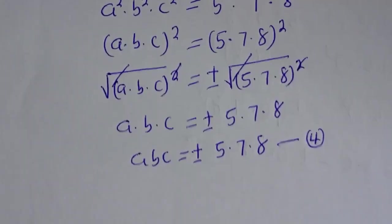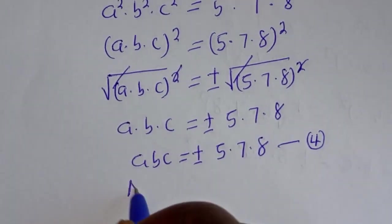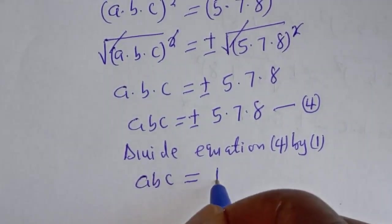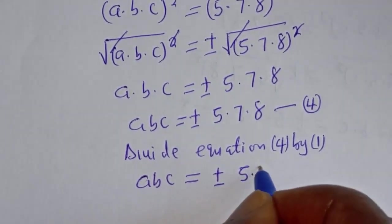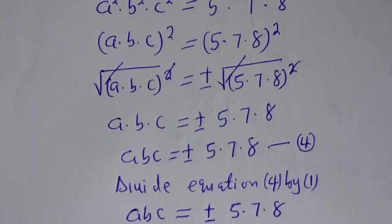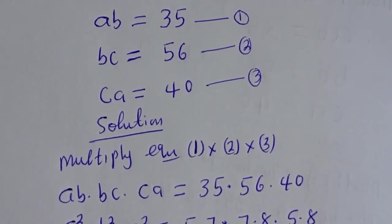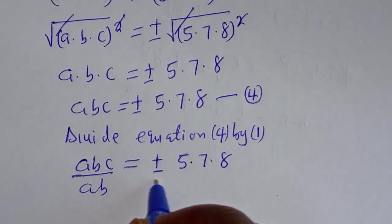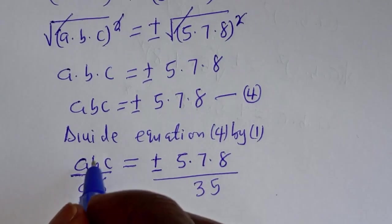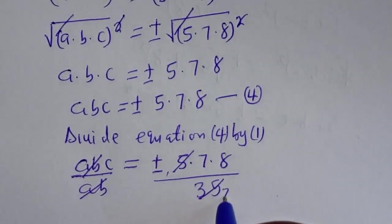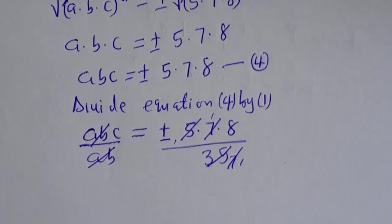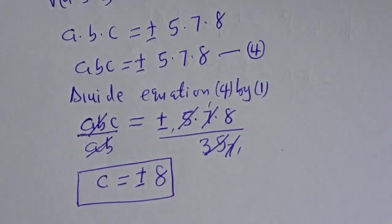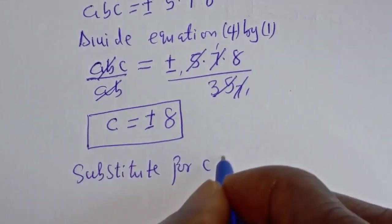Now let's divide equation 4 by equation 1. Equation 4 is ABC = ±5×7×8, and equation 1 is AB = 35. Dividing, AB cancels, and 5×7 cancels with 35, so C is equal to plus or minus 8. This is the value of C.